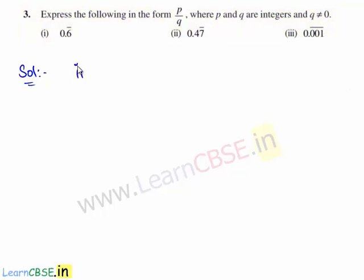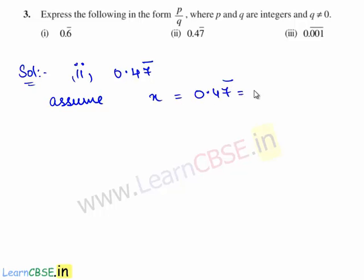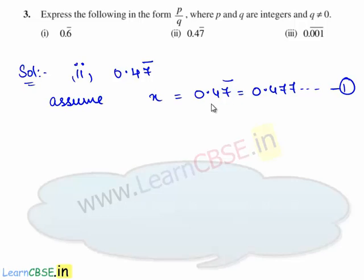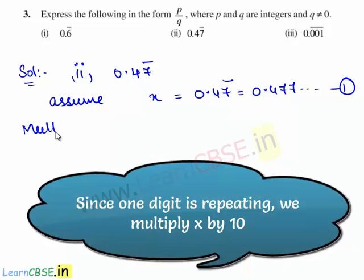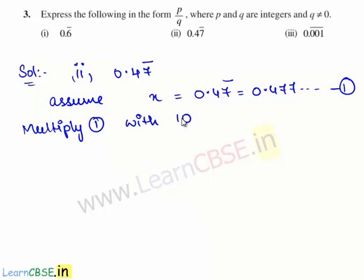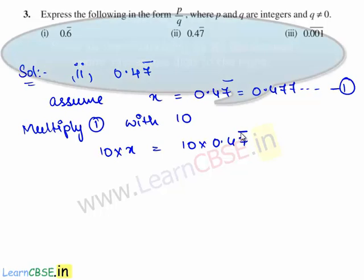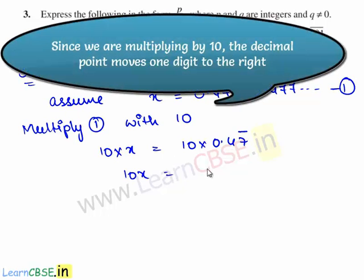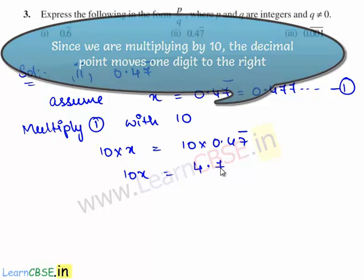The second decimal expansion given is 0.47 bar. We shall assume the given decimal expansion as x. Therefore x is equal to 0.47 bar, which is 0.477 and so on. Consider this as equation 1. Since 1 digit is repeating in the given expansion, we multiply equation 1 with 10. That is, 10 times x is equal to 10 times 0.47 bar.